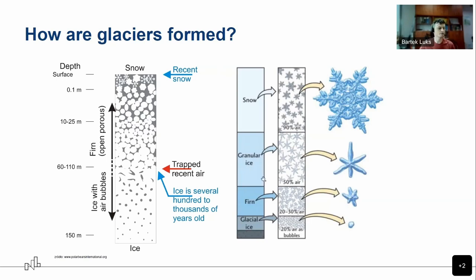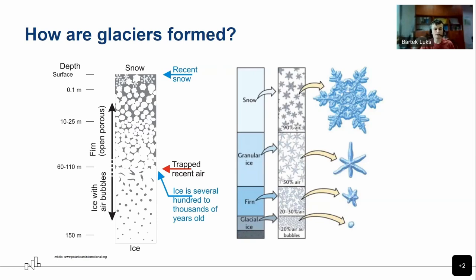Snow transforms first to granular ice — a form of firn — which are big ice crystals, around two to three millimeters. They no longer look like snowflakes. Then snow falls again the next winter on this granular ice, and if it doesn't melt fully during summer, mass and pressure start building up. When pressure from the upper layers builds up, firn forms — larger ice crystals. With more and more pressure each season, the firn transforms to glacier ice.